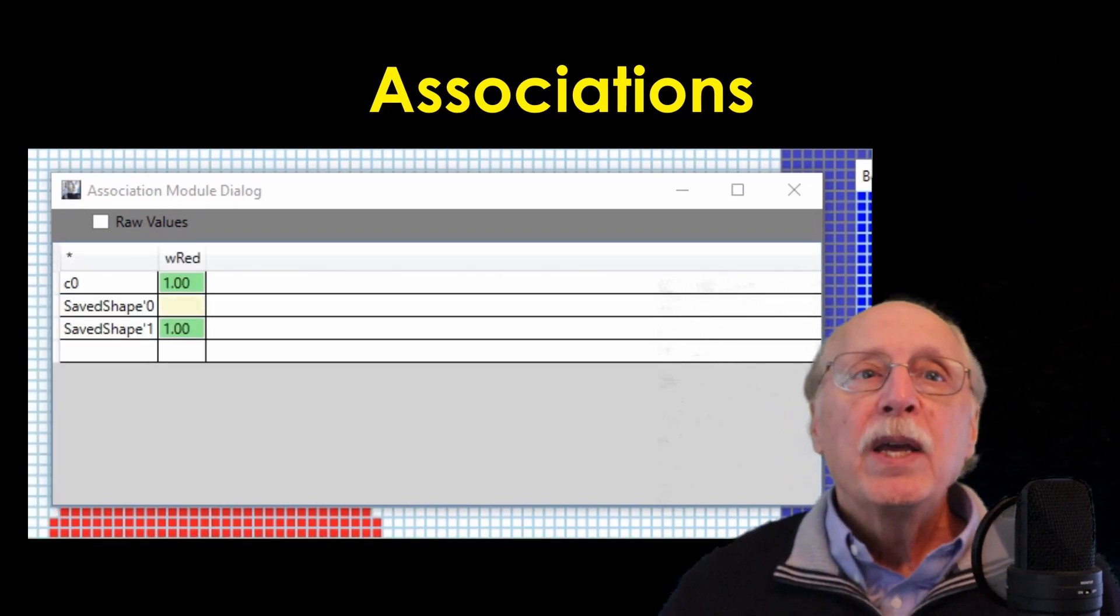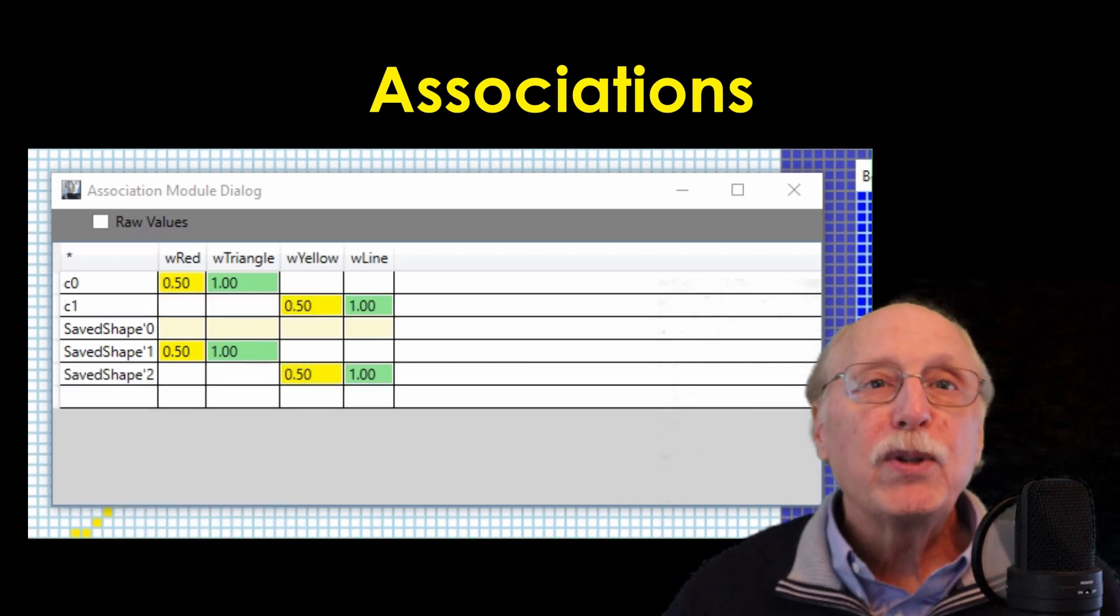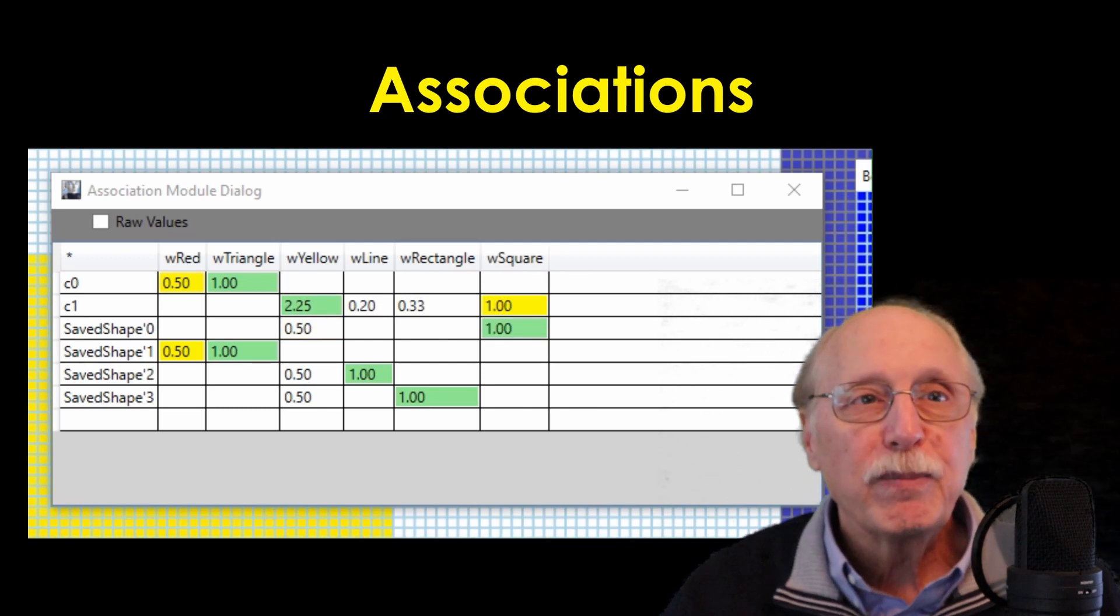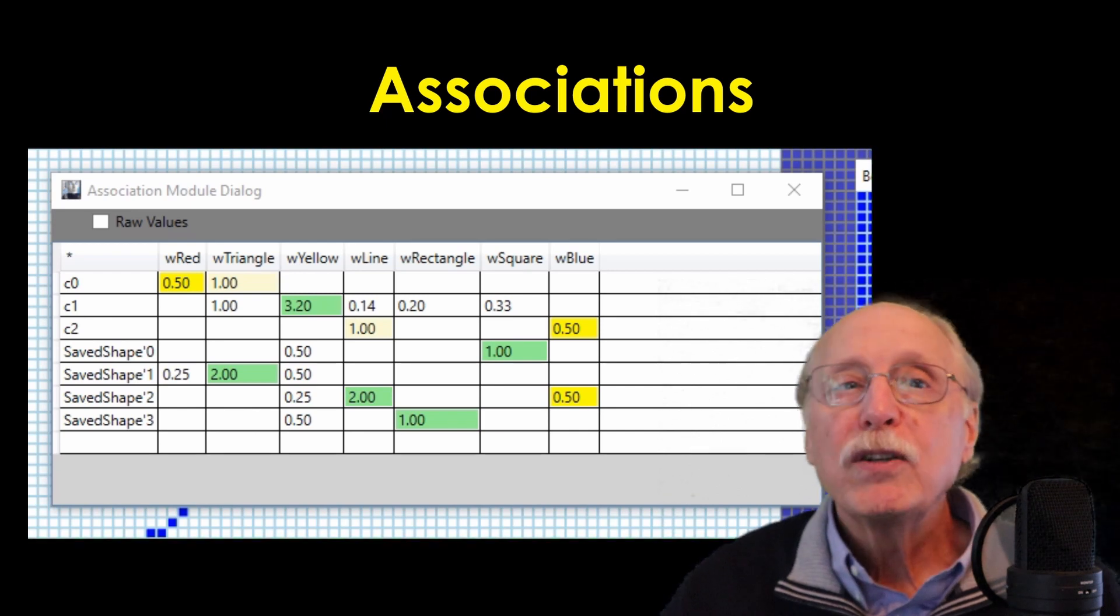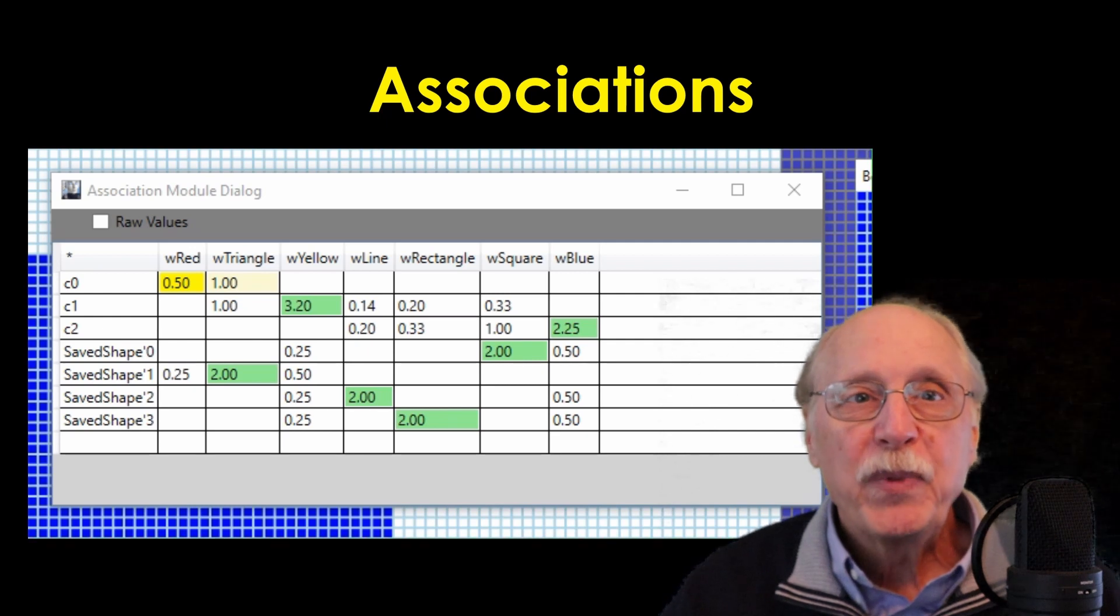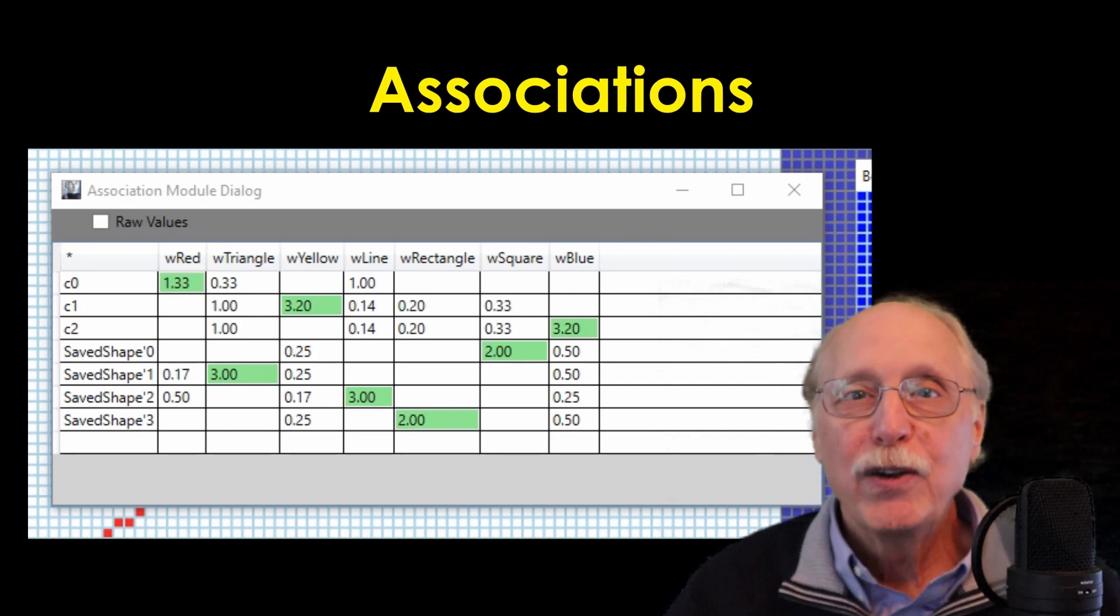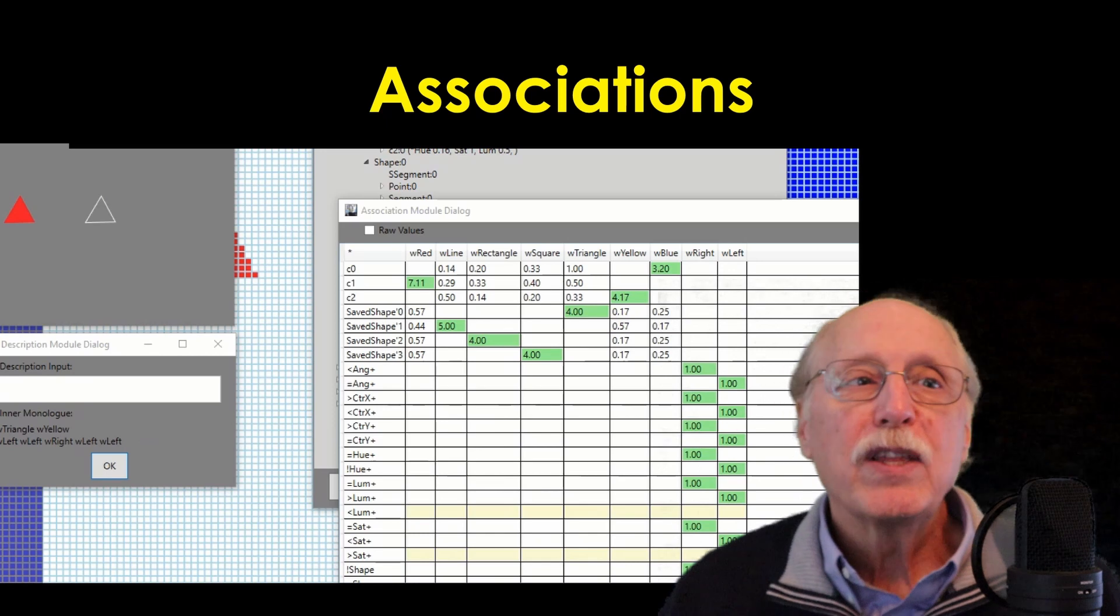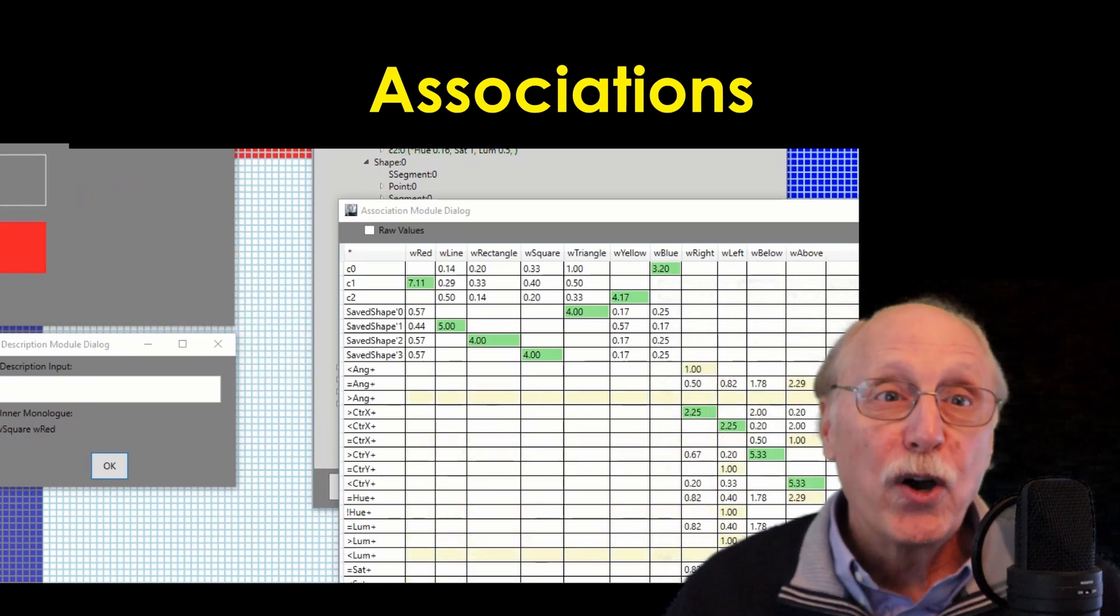Associations: This last step in this demonstration merges visual and verbal attention streams so that words can be associated with properties and relationships. When an object gets attention, its UKS node fires along with its related property and relationship nodes. Likewise, when a word is heard, it gets attention and its associated node fires.